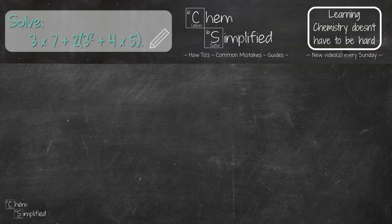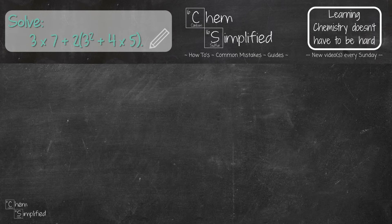We went through two examples together. Why don't you try one out on your own? 3 times 7 plus 2 open bracket 3 square plus 4 times 5. I'll place the answer in the description box.